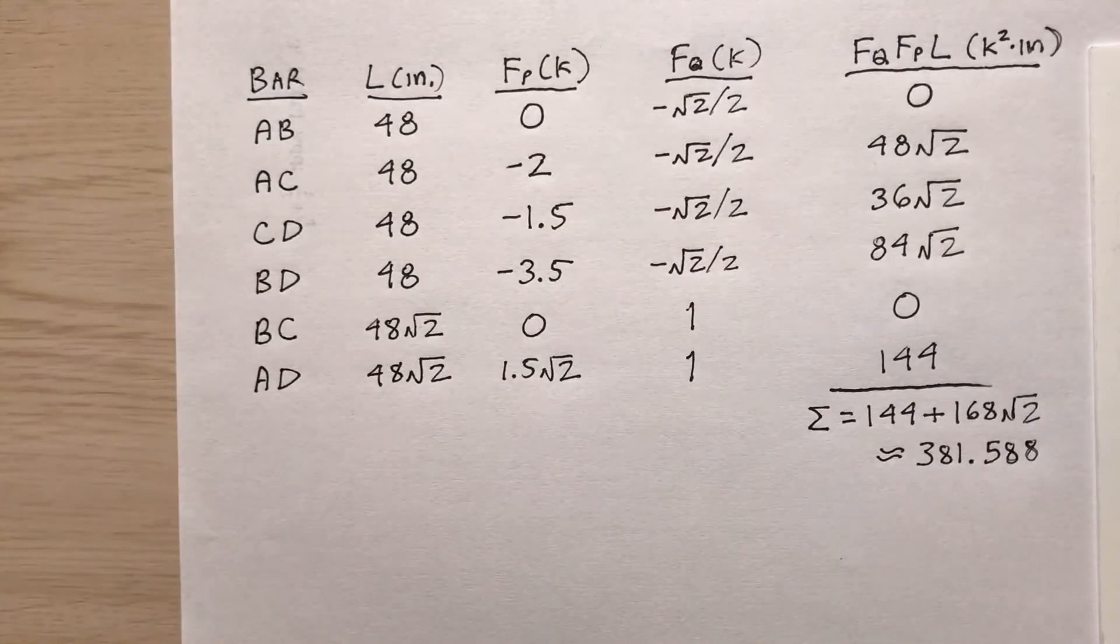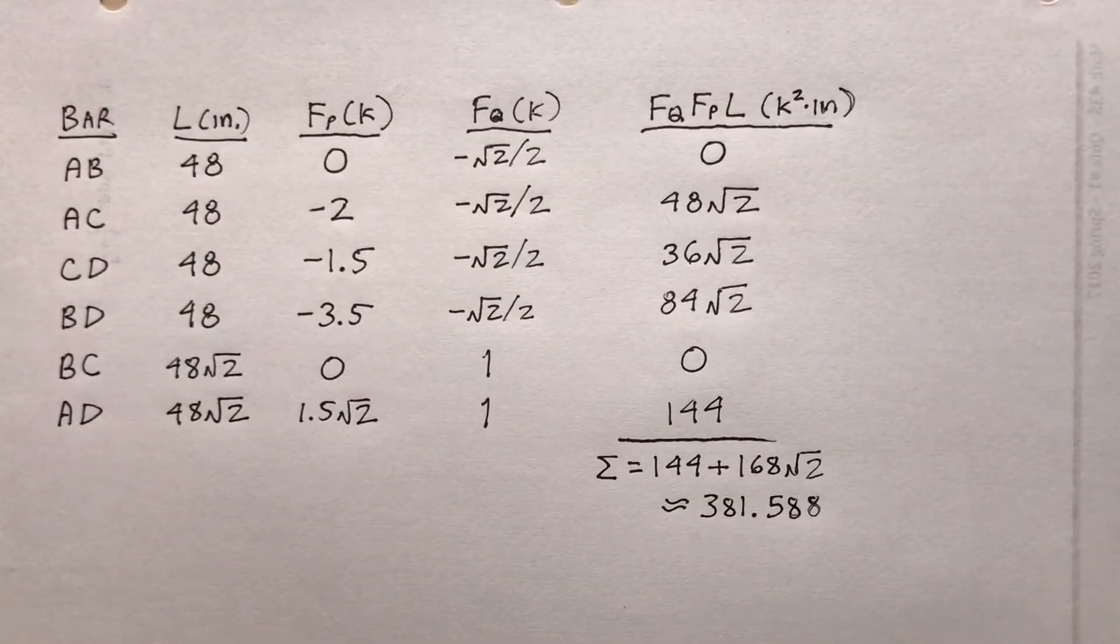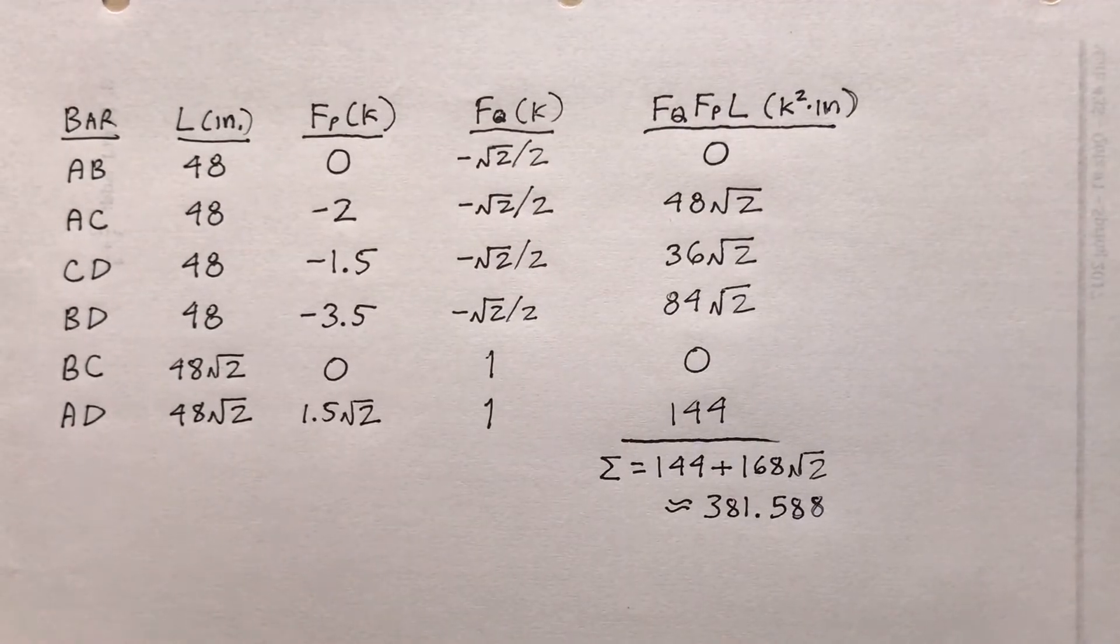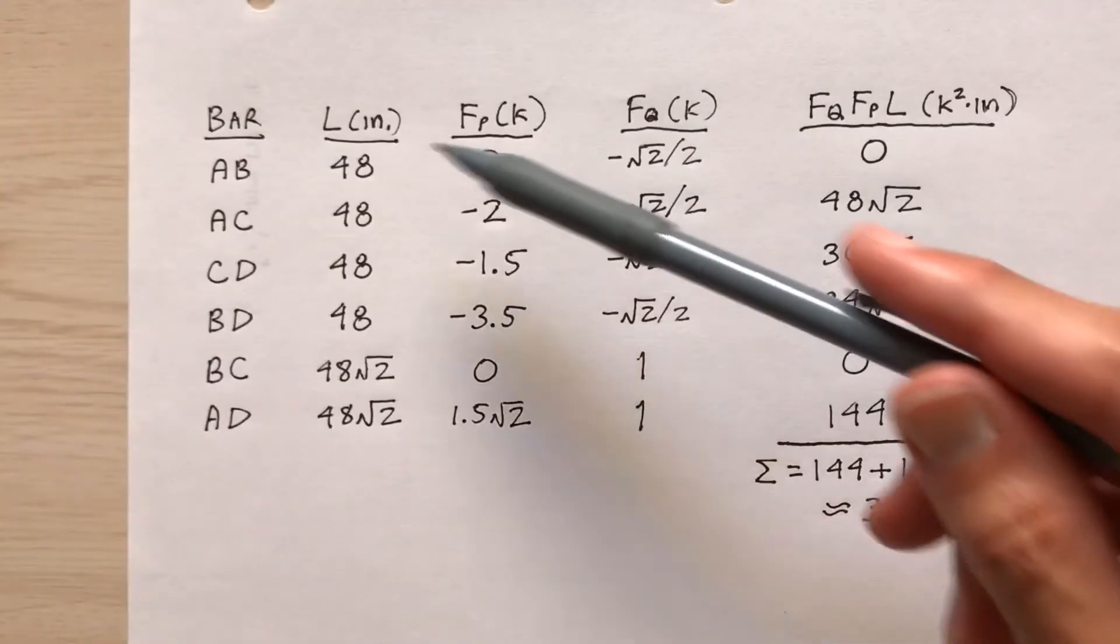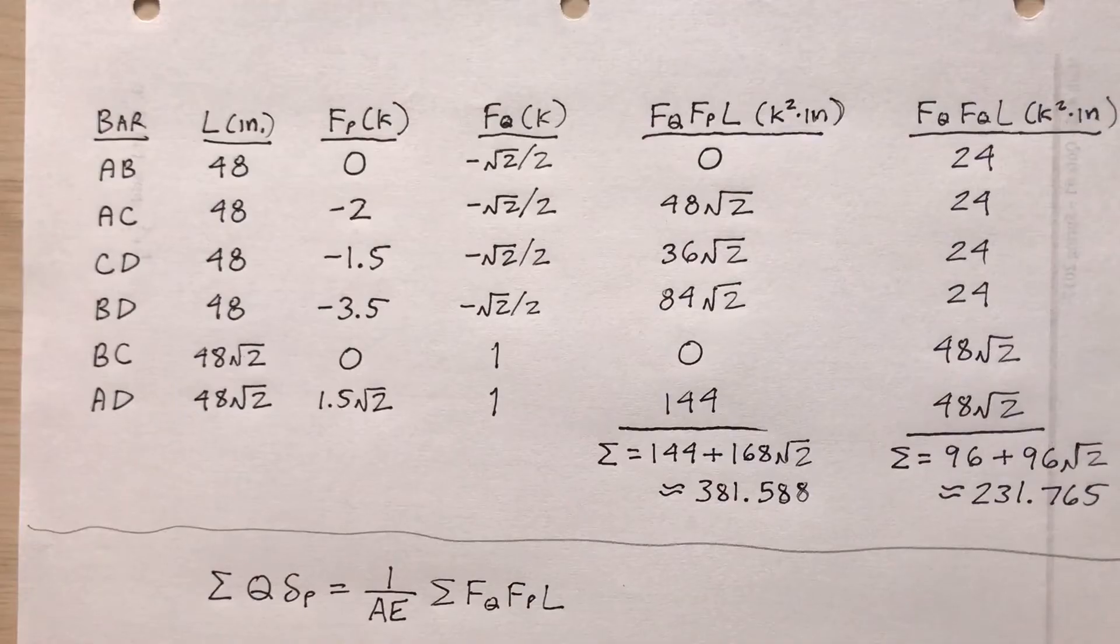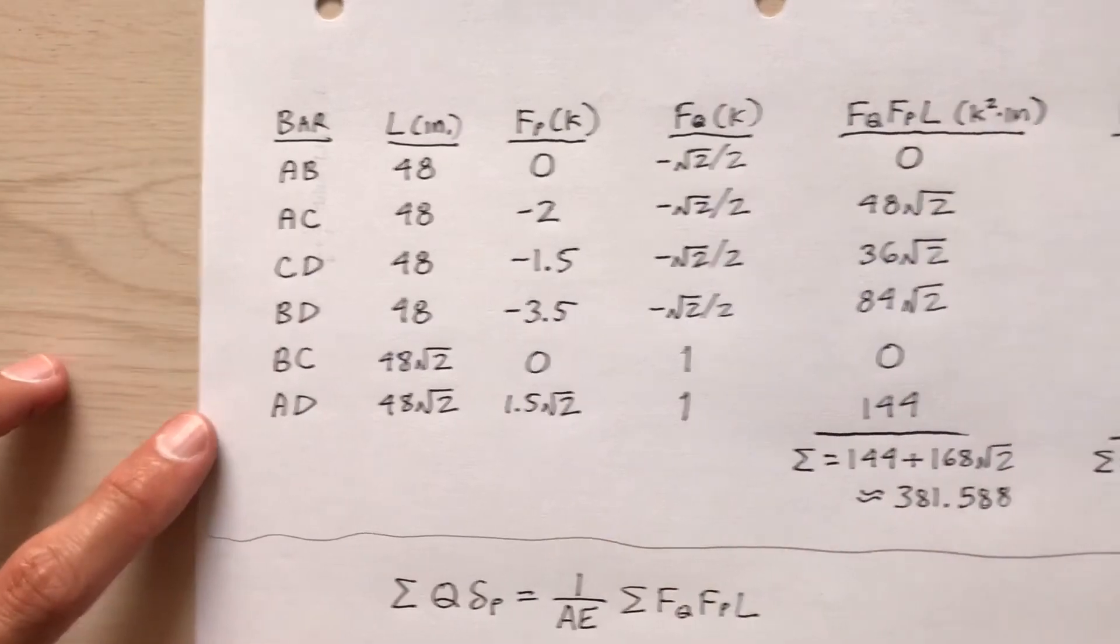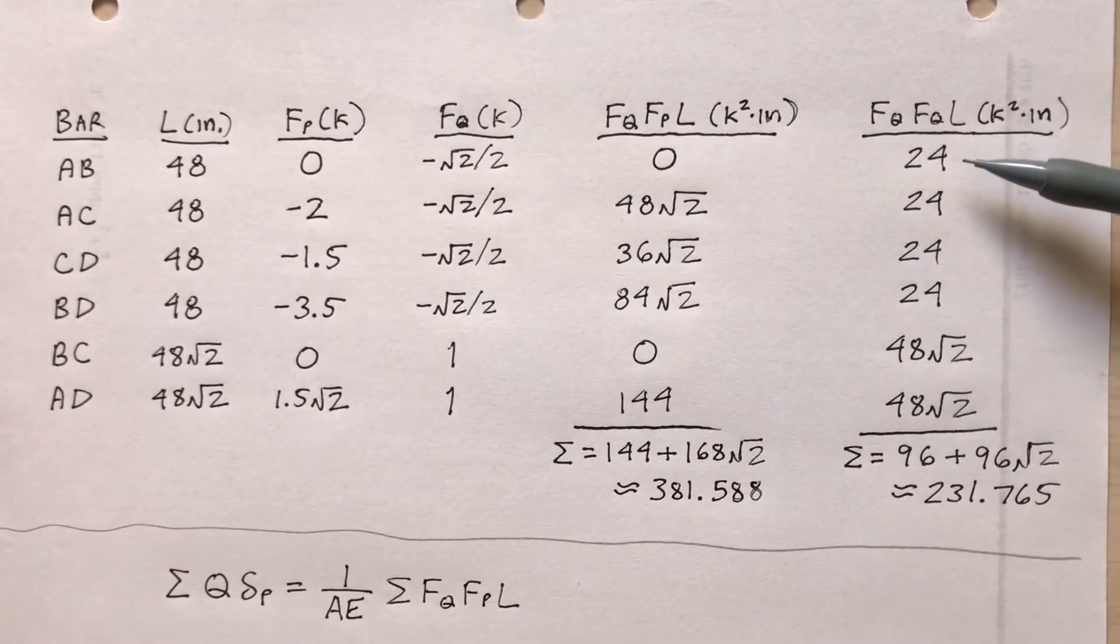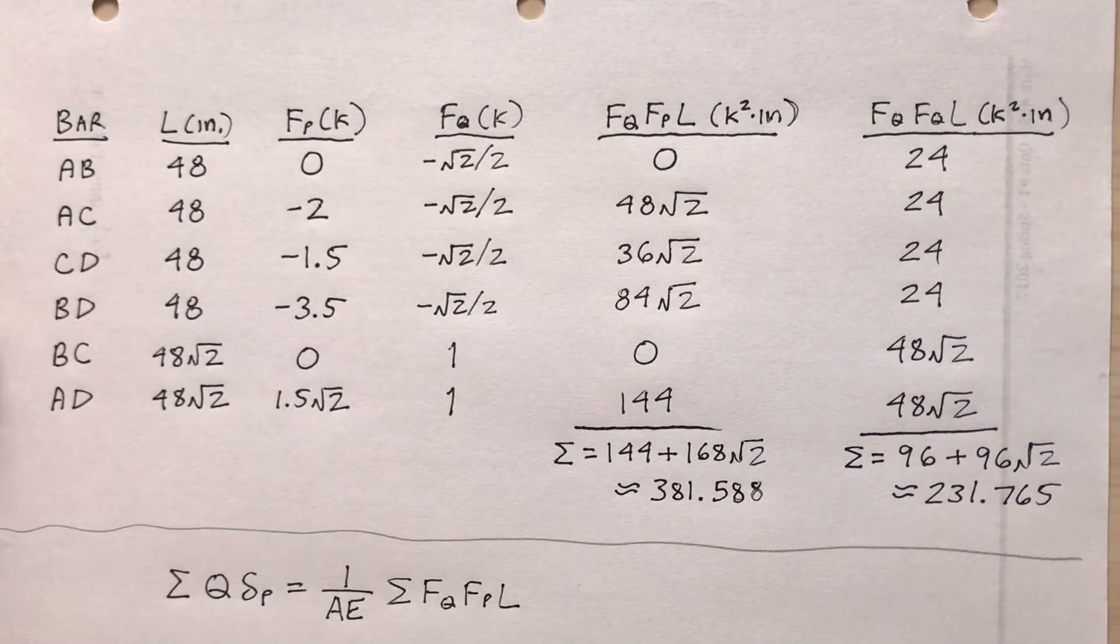Now in order to do that, I can consider this to be both the real and the virtual system. So there's another column that I'm going to throw on here, another column where I consider this to be both the real and the virtual. So I won't have FQ, FPL. I'll have F sub Q times F sub Q times L. So there it is. I put together the calculations for that last column. F sub Q squared, that'd be this column squared, times L, that'd be this column. Be aware of the unit square kips times inch. Add it all up. 231.765.